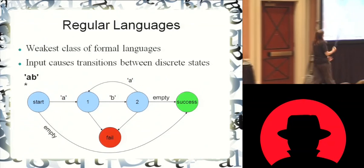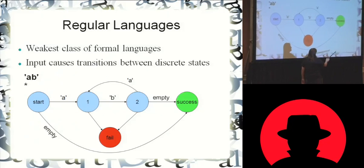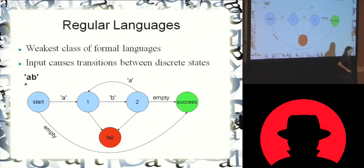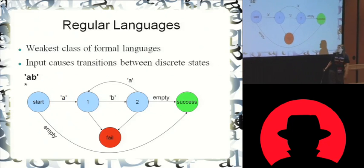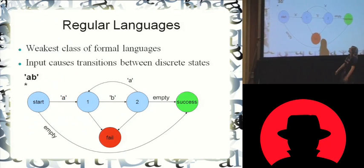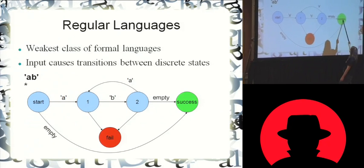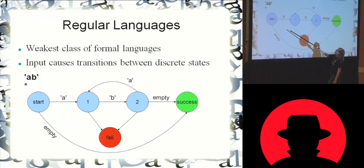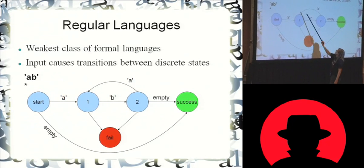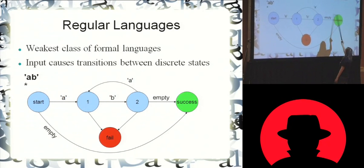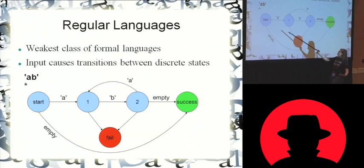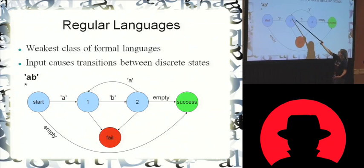It can be zero or more repetitions, so it can go from start to success without any input actually happening. Or it can be one repetition: we go A, B, nothing more, we're done. It can be two repetitions: A, B, A, B, and we're done. You see how it loops. If we see anything else, then it'll go to the dump state and the string is not recognized.